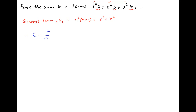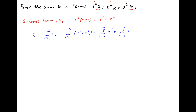Therefore, S_n, which is the sum to n terms, is equal to the summation of u_r, which is equal to the summation of (r³ + r²), which is equal to the summation of r³ plus the summation of r², where r goes from 1 to n.